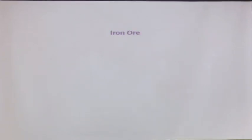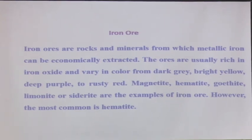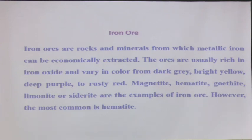We have to start with iron ore. Iron ores are basically rocks and minerals from which metallic iron can be economically extracted. The ores are usually rich in iron oxide and vary in color from dark grey, bright yellow, deep purple to rusty red. There are varieties of ores for iron: magnetite, hematite, goethite, limonite, and siderite.